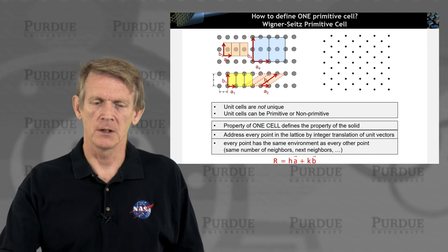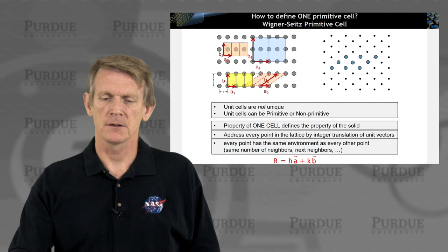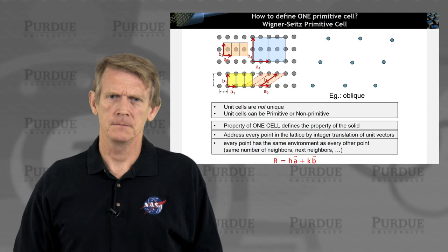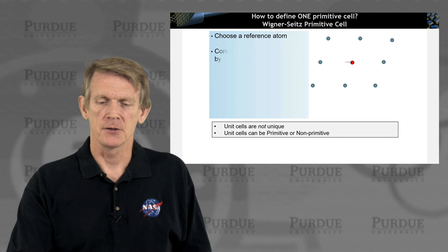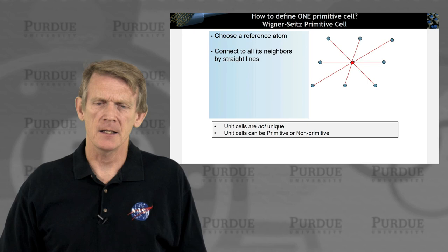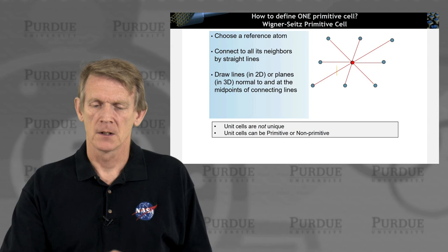And there is a recipe like that, it's called the Wigner-Seitz cell. So we look at this lattice here on the top right and focus on these atom points or grid points and establish a single primitive cell. The way you do that is you choose a reference atom, like the one here in red, and you draw lines to its nearest neighbors.